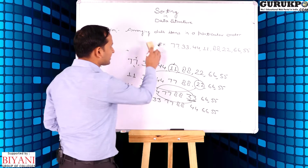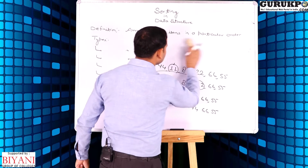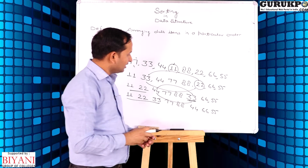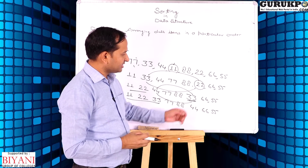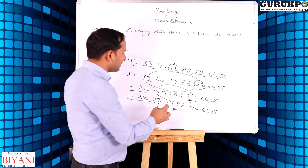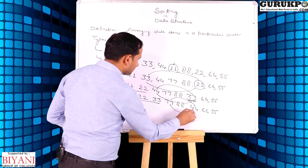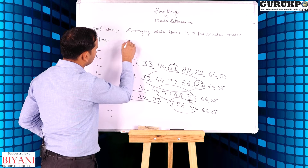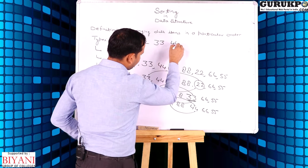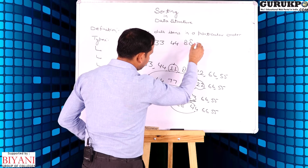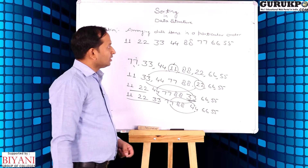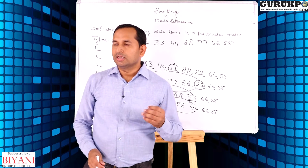Now we scan the entire list again and find out the smallest element in the remaining list. In this case we have 5 remaining elements: 77, 88, 44, 66, and 55. Here 44 is the smallest element and we put this element into the fourth place. Now all the first four elements are already sorted.